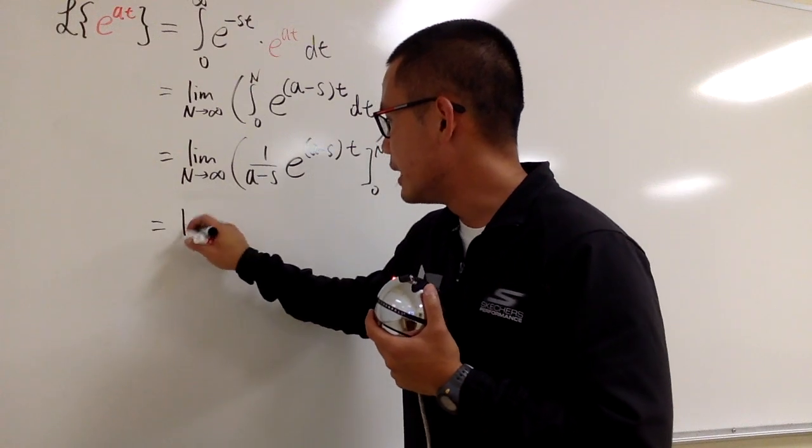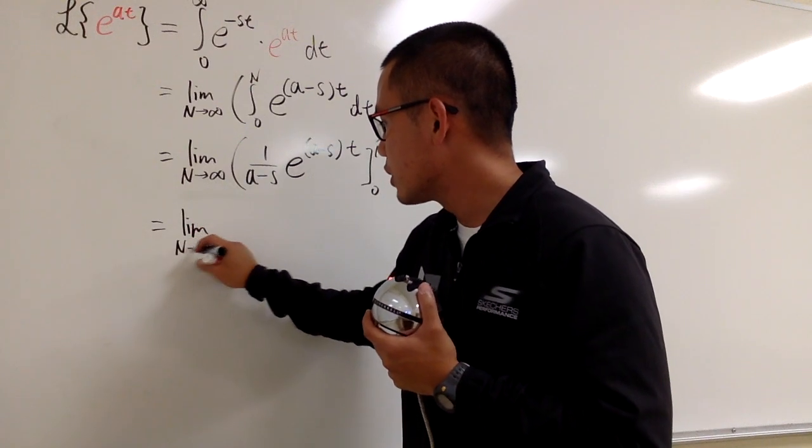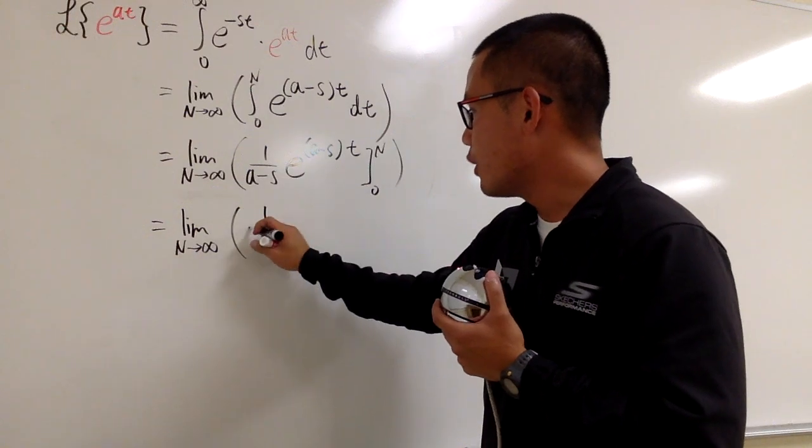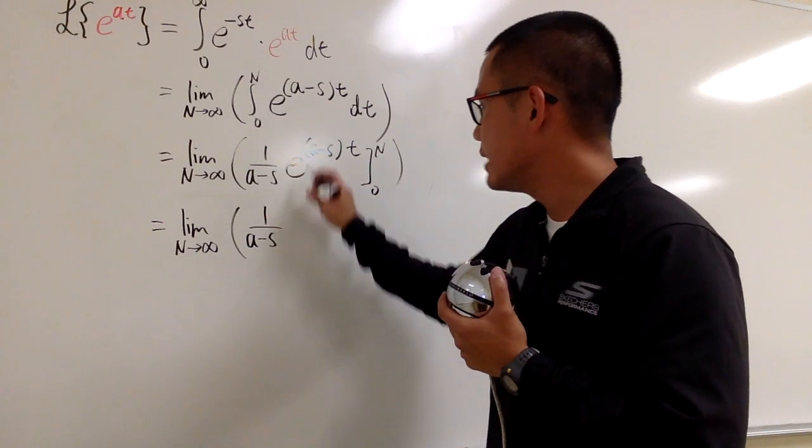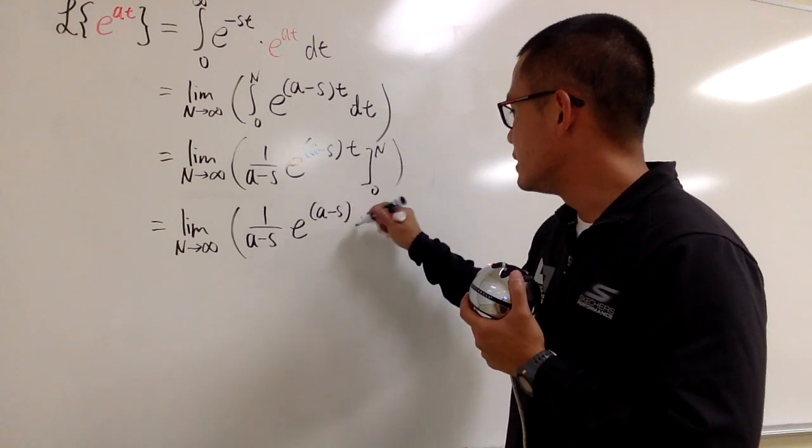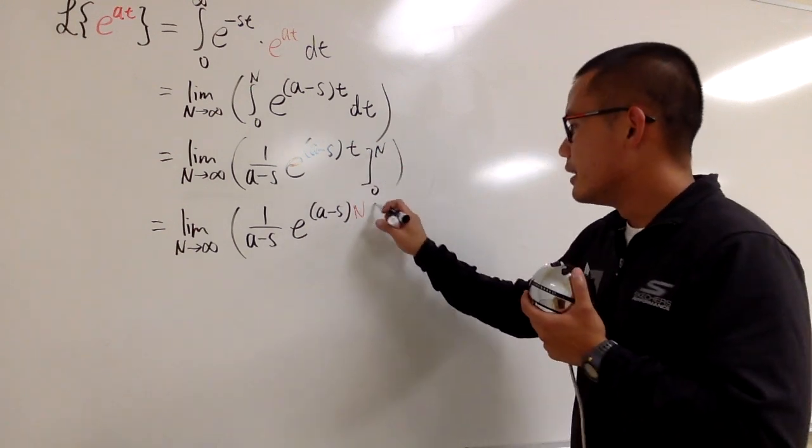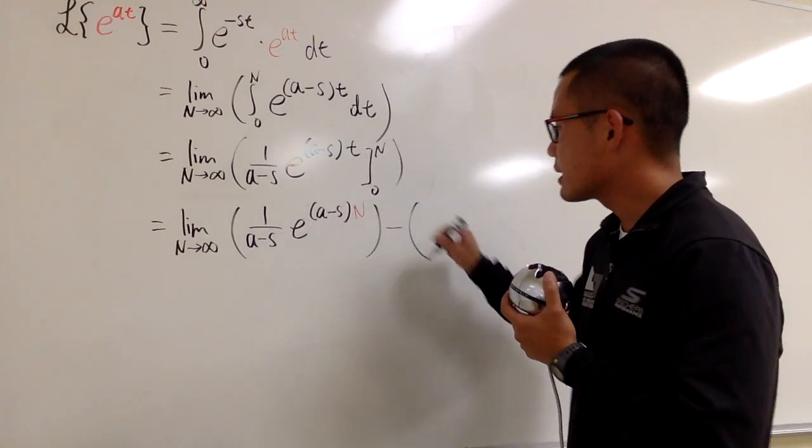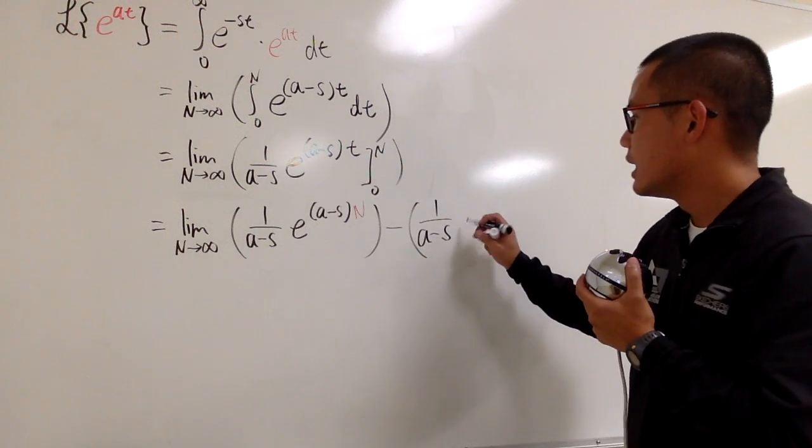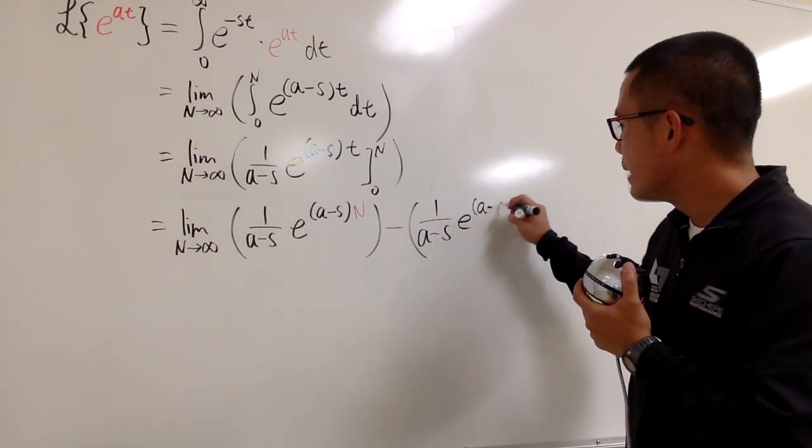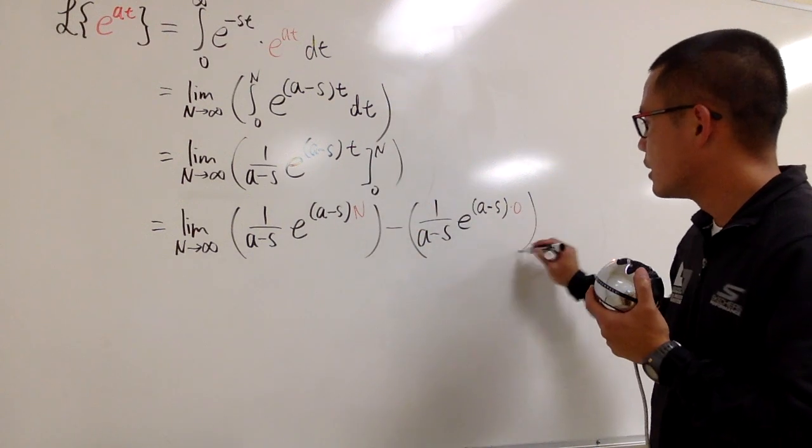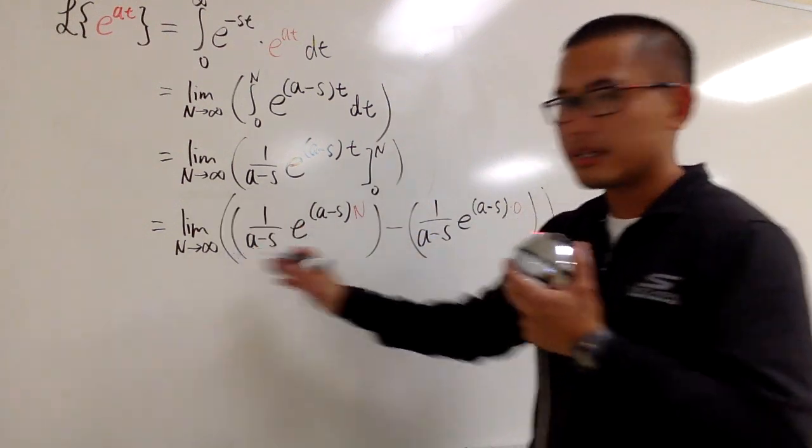Here we will have the limit as n goes to infinity. We will have 1 over a minus s, and then this is e to the a minus s times n. This is the first term, and then we subtract, plug in 0. We will have 1 over a minus s, e to the a minus s times 0, which is like this.